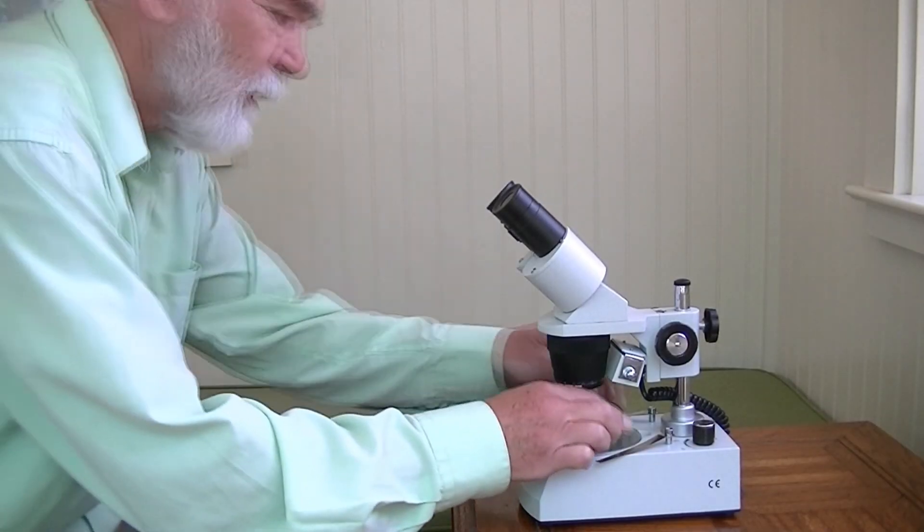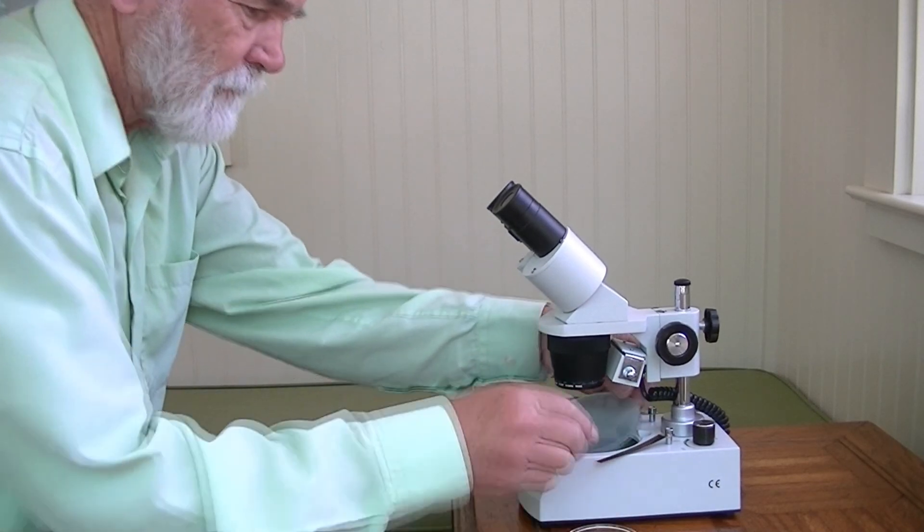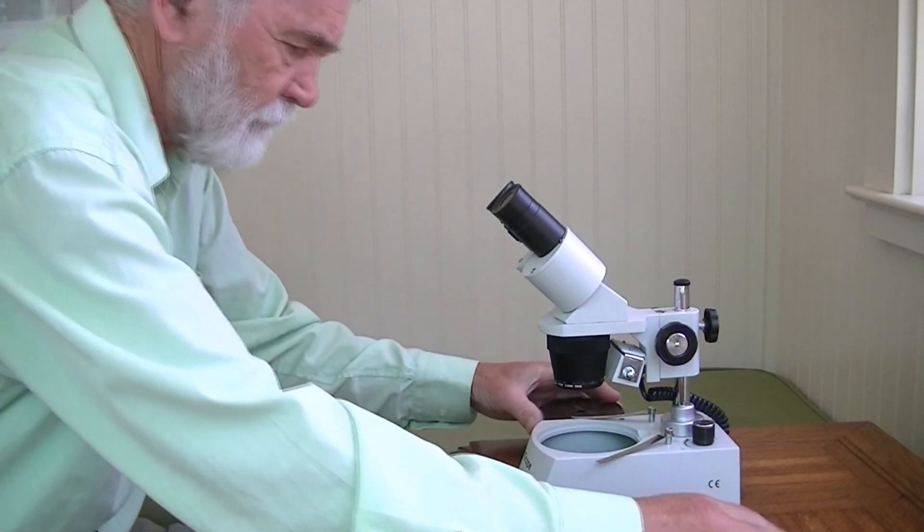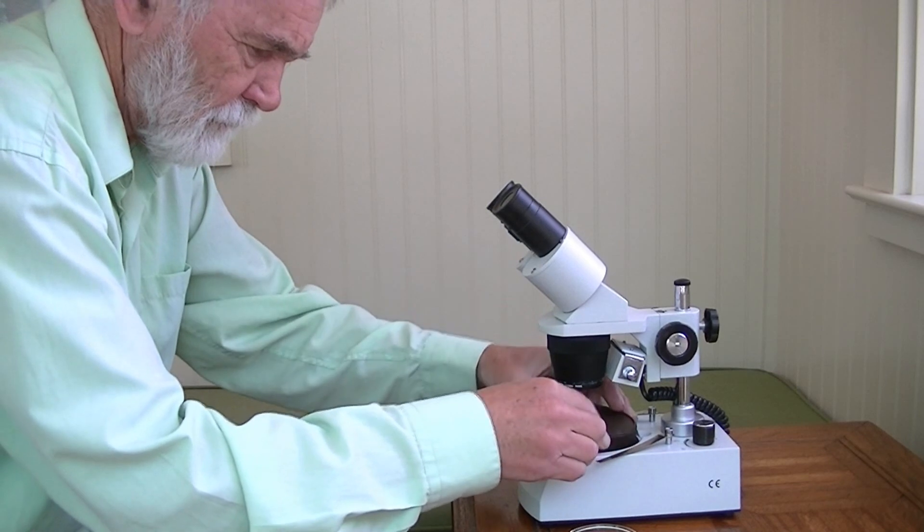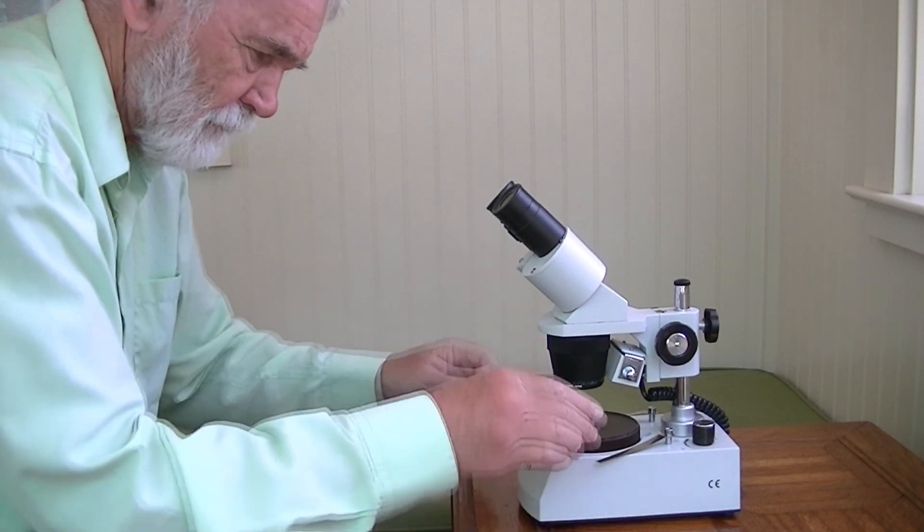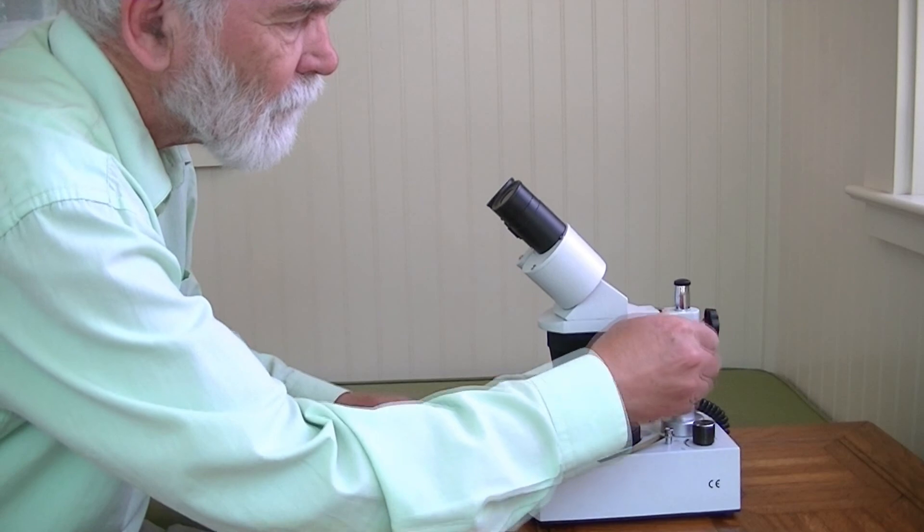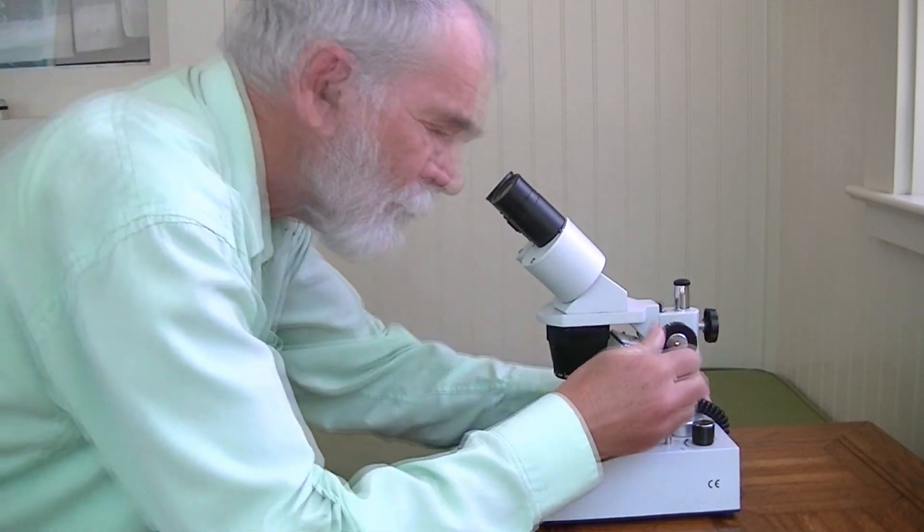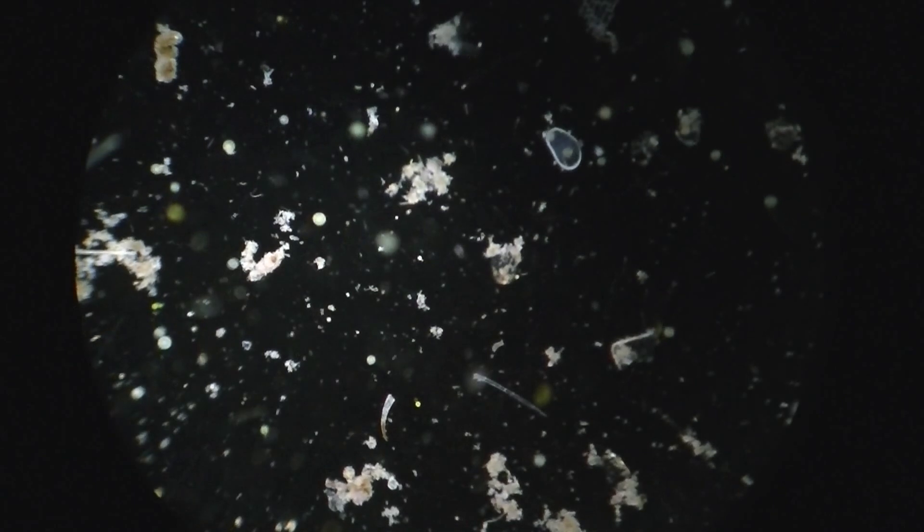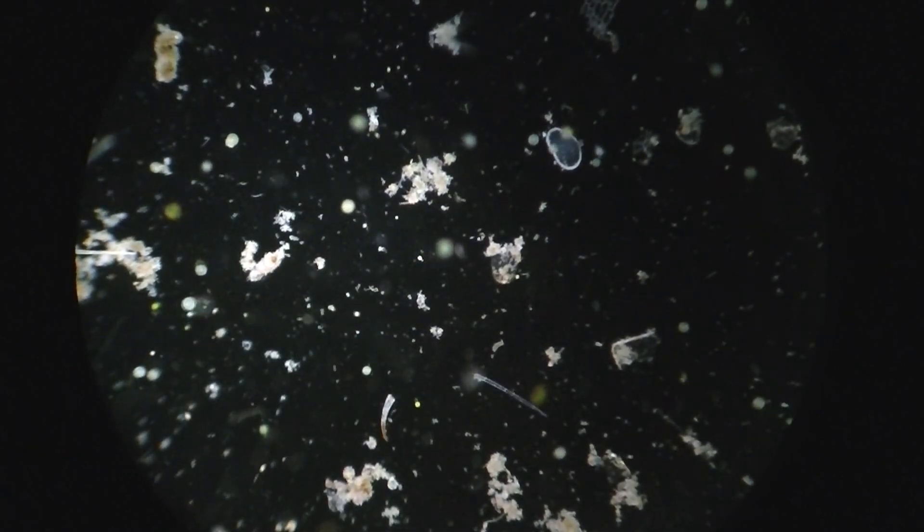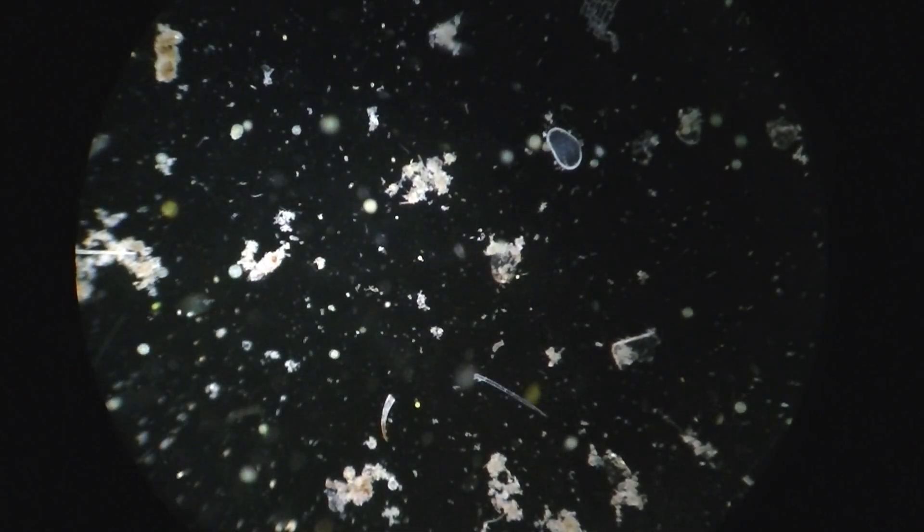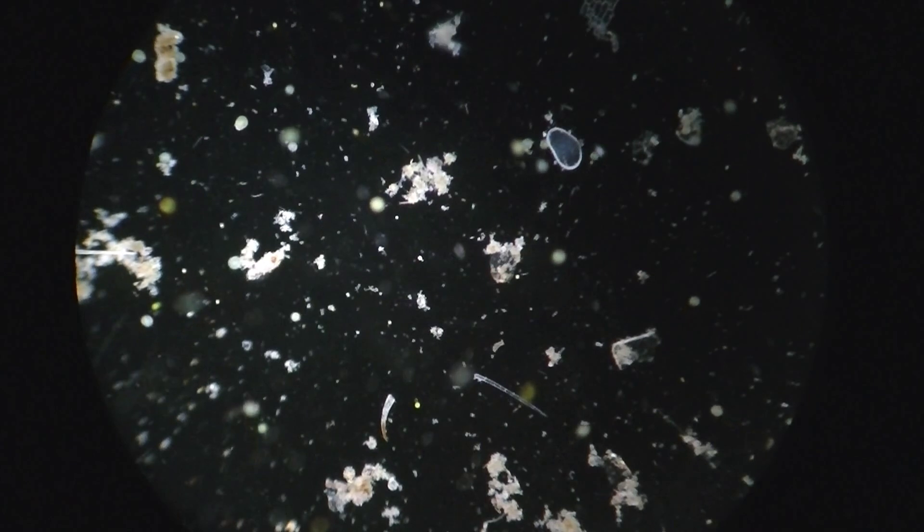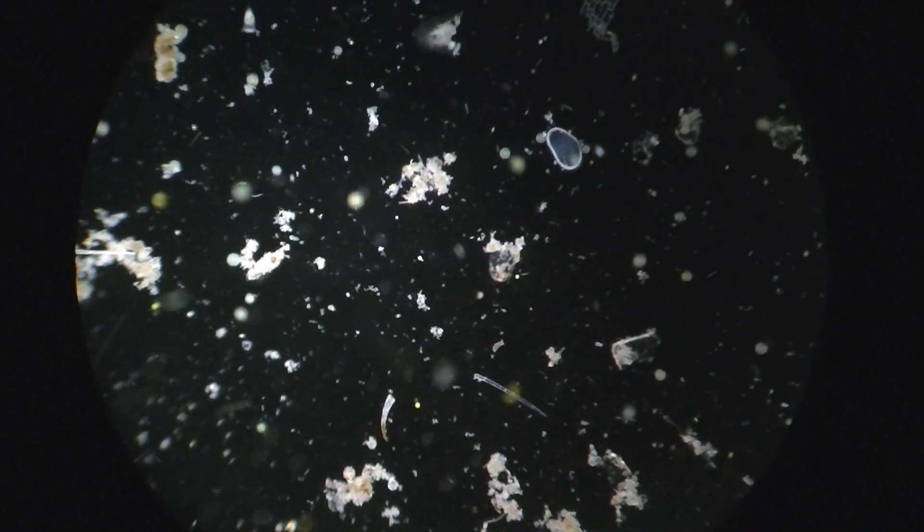Now let's switch to dark field. This is now dark field and I see nothing, but if I turn up the illumination, we now get microbes and the sludge backlit in dark field illumination. You can see a lot more in terms of motile organisms.